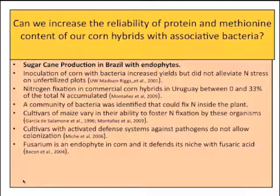Recently there's an exciting group down in Uruguay working on nitrogen fixation in corn and trying to estimate how much gets fixed. It could be as much as a third of the nitrogen in the plant, according to some isotope studies. They identified a community of bacteria inside the plant — not only on the root, but inside the plant — that can fix nitrogen. There is actually quite a bit of older work suggesting that varieties of corn differ in their ability to work with microbes and fix nitrogen. One issue is why some varieties are susceptible to working with bacteria and others are not — it could be that some have set a higher threshold in their defense systems, and if that defense system gets turned on, they won't let bacteria grow in.